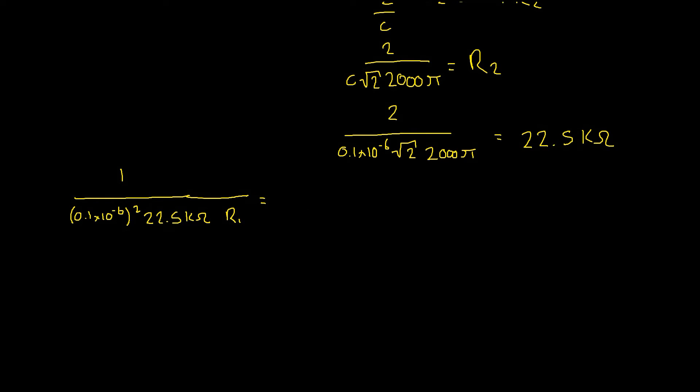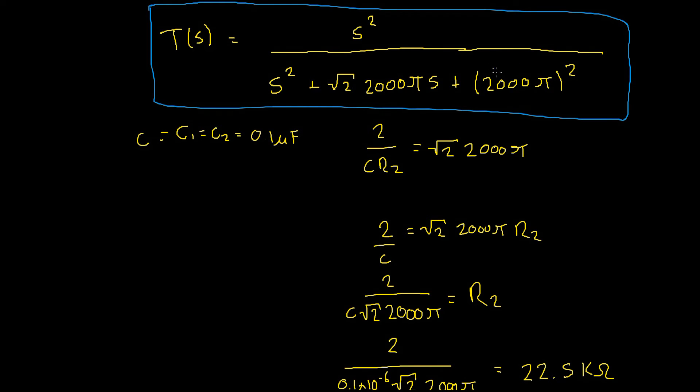and this is where we compare our terms again, the coefficient of our S to the zero term which is 2000 pi squared.